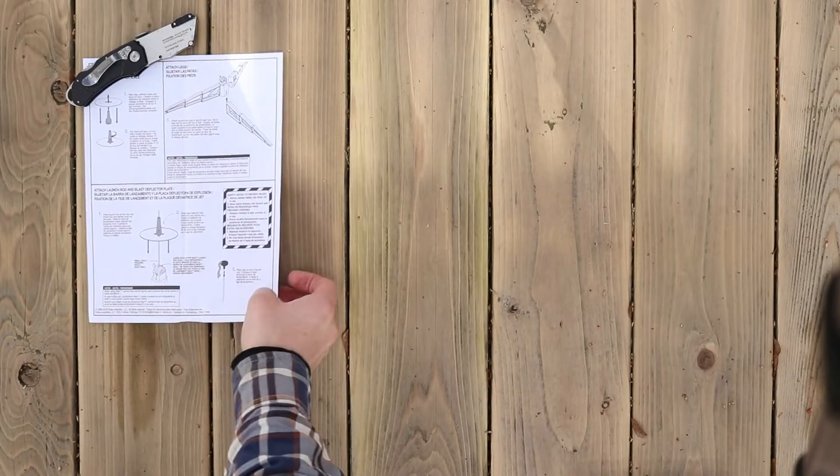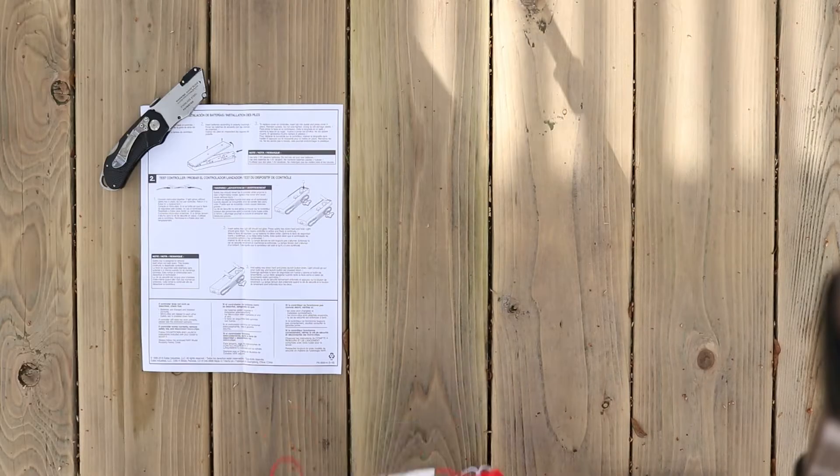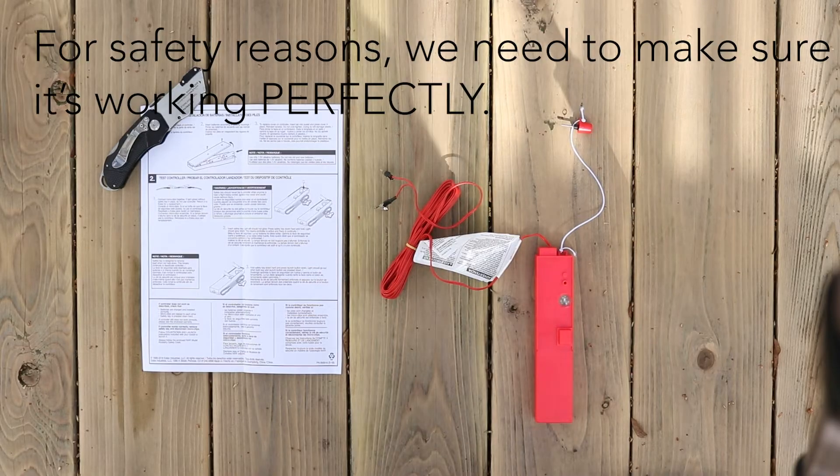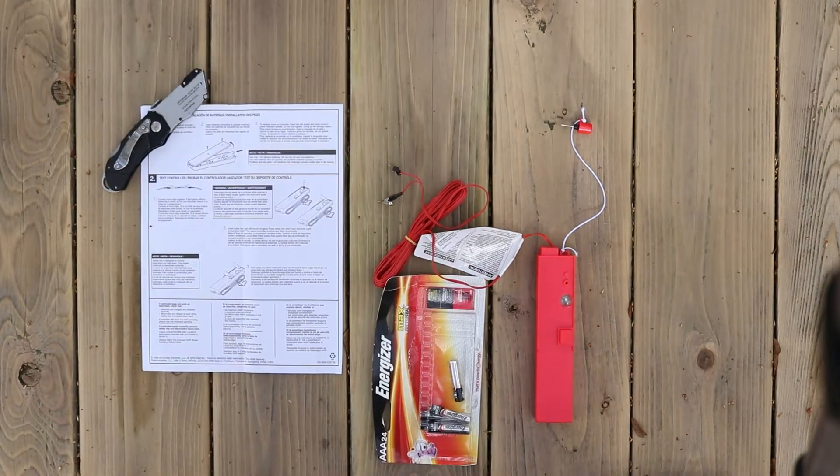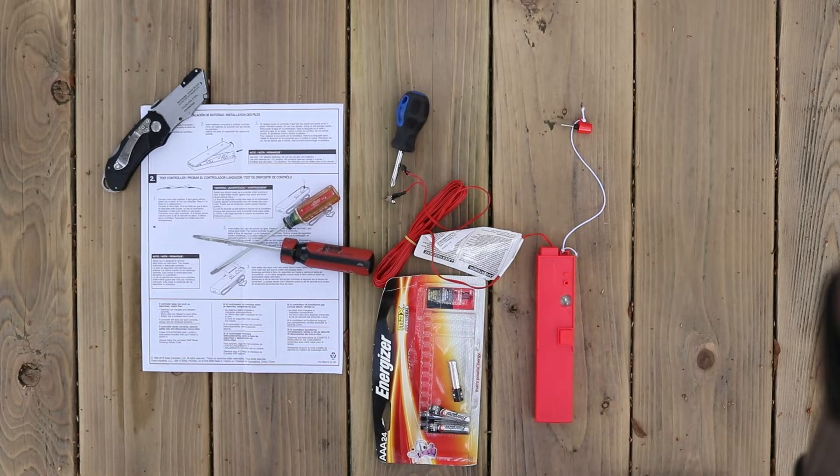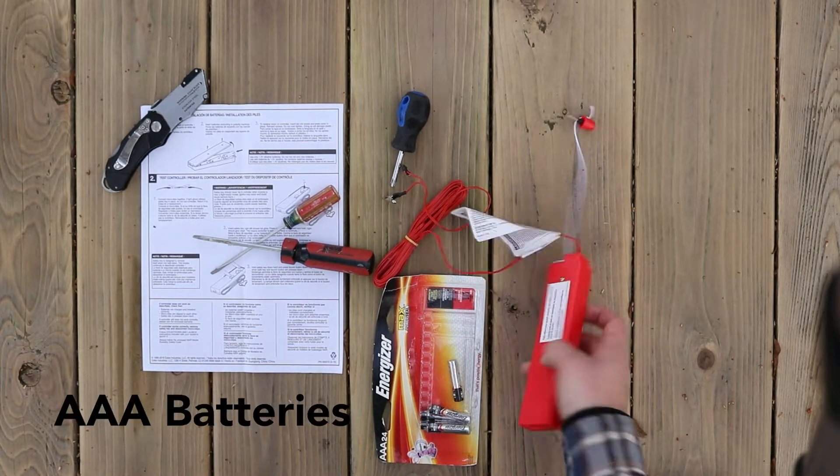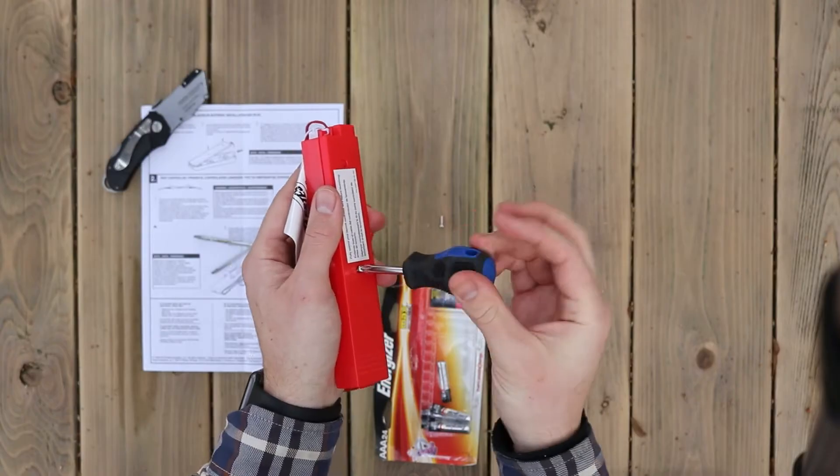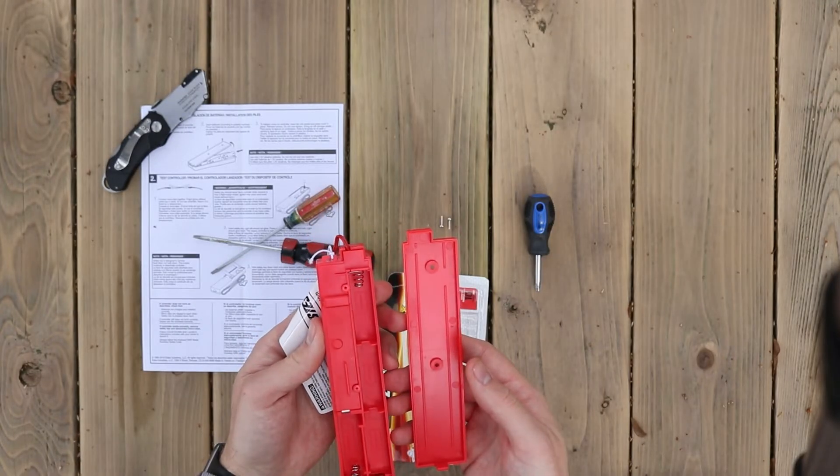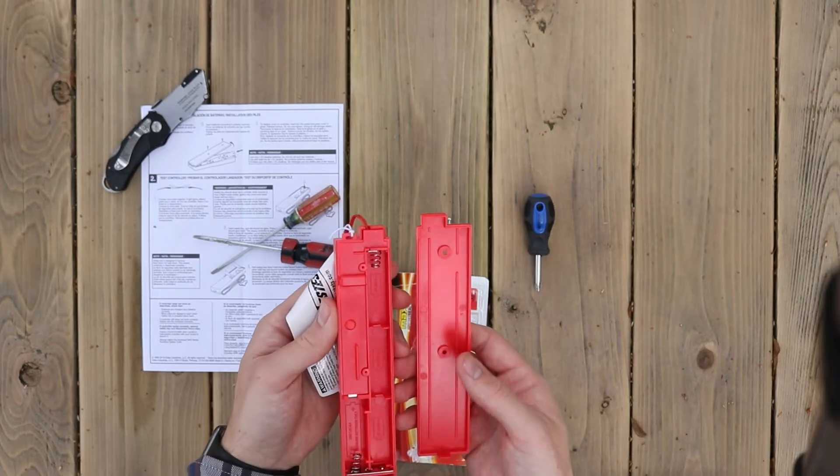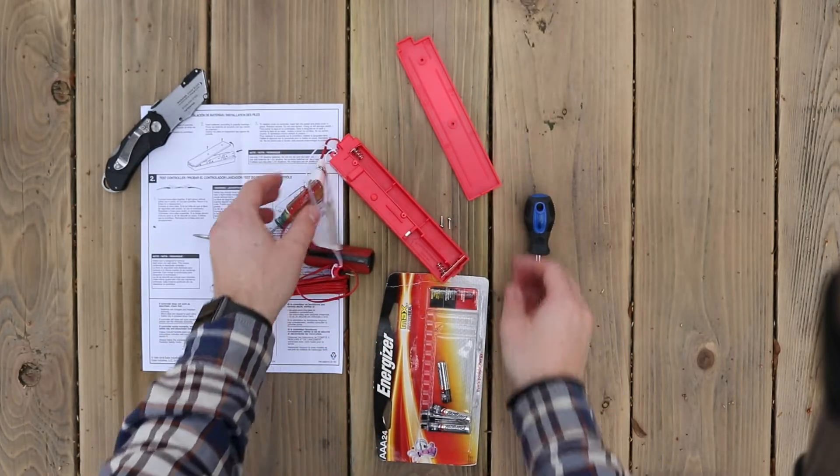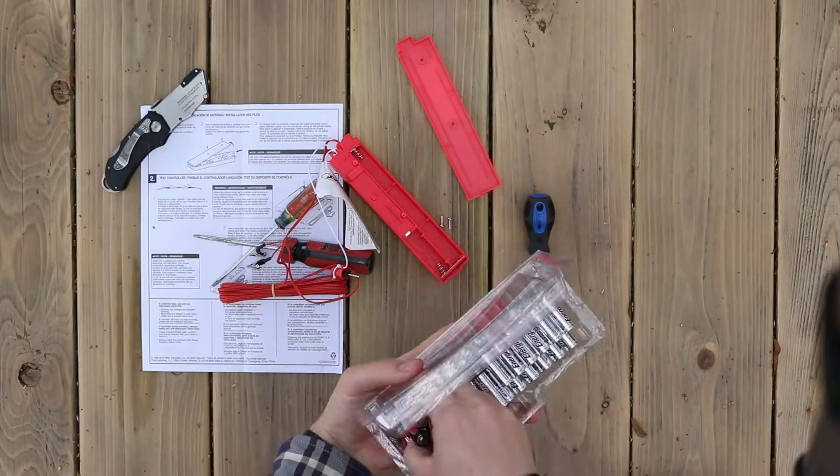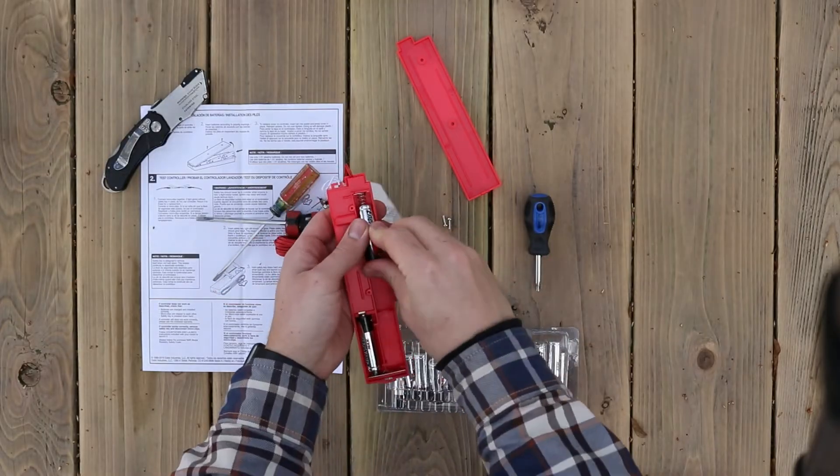Next, we'll set up our launch controller, which might take more steps than you think, because for safety reasons, we need to make sure it's working perfectly. You'll need AA batteries and a screwdriver. Please be smarter than me - those are AAAs, I need AAs. Take out the two screws to open the controller. Look, this is the point where I realize I need AAs, and these are AAAs. What a moron. There we go, that's better. Okay, install the four AA batteries and put the controller back together.